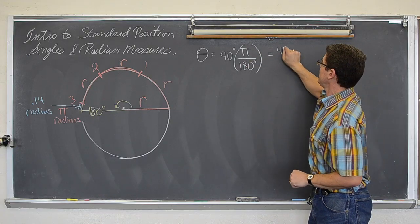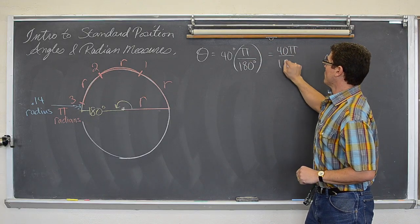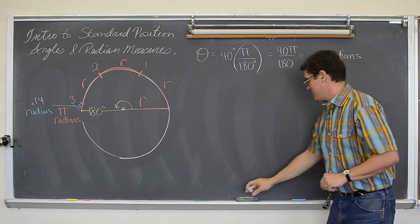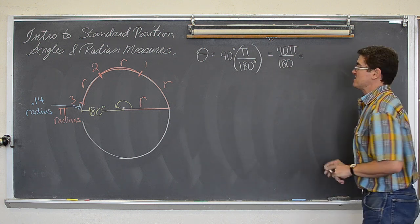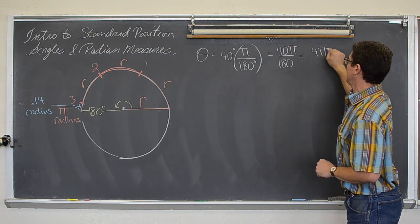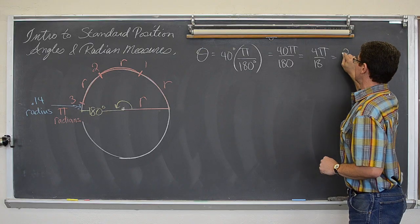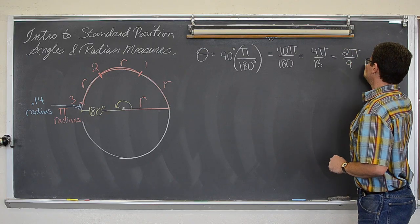So this becomes 40 pi over 180. That is, you don't have to take as many steps to reduce, but that will be 4 pi over 18, which is 2 pi over 9 radians.